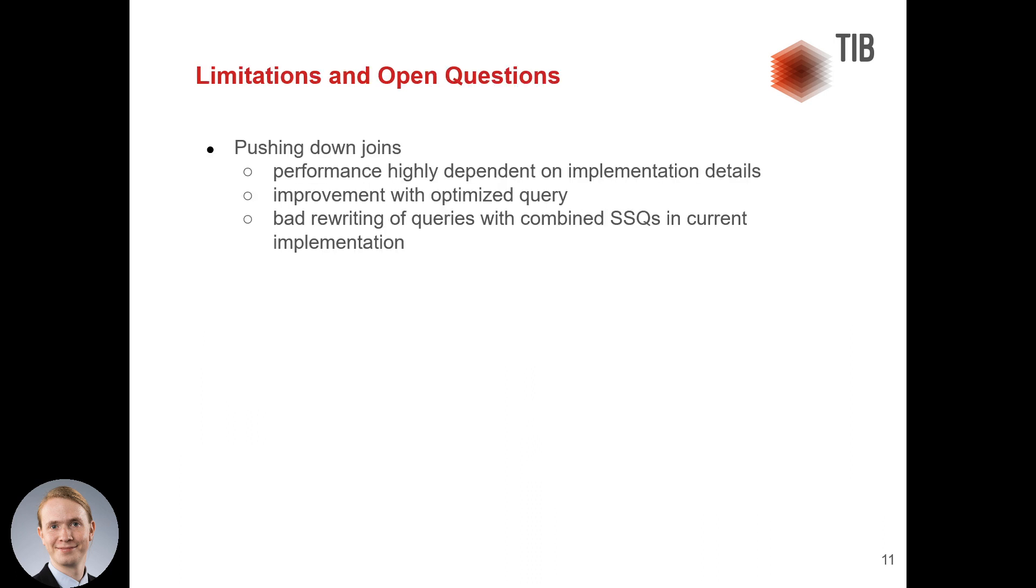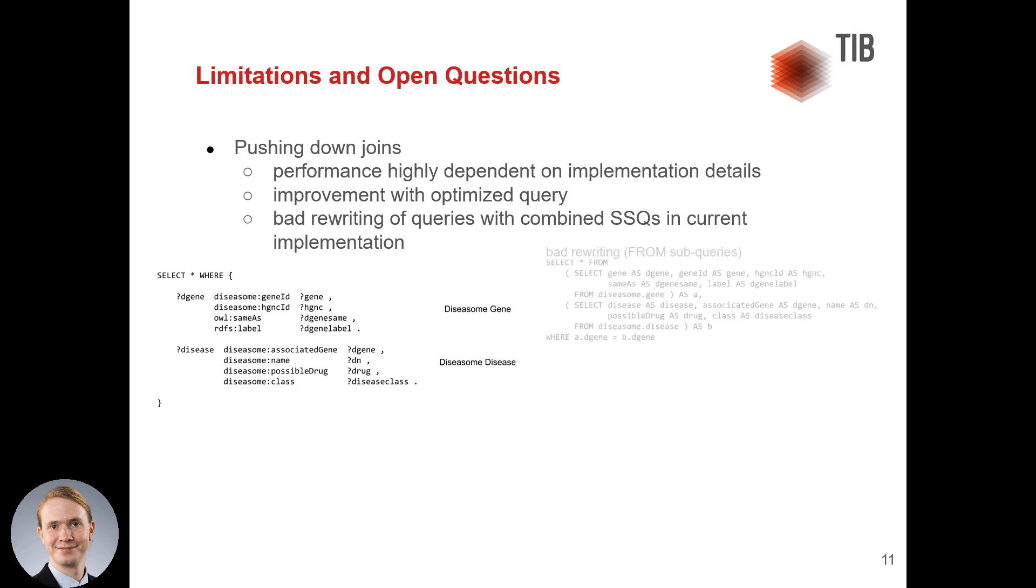So, limitations. Pushing down joins is highly dependent on the implementation details. If we have a simple query with two star-shaped queries, we can perform a bad rewriting with from-subqueries, which the current implementation does.